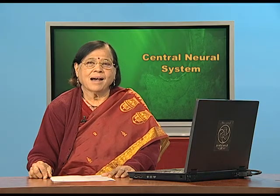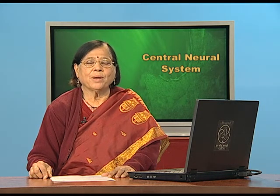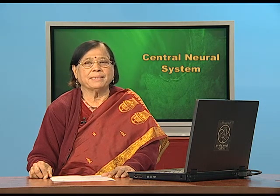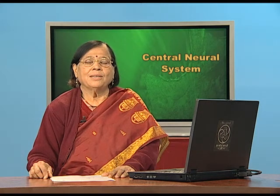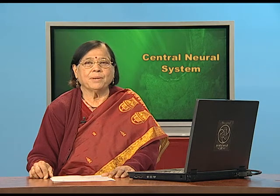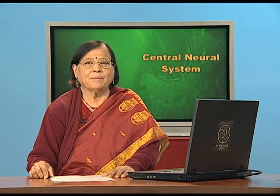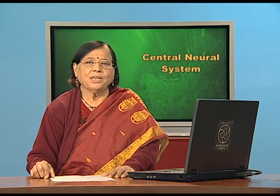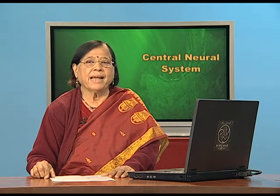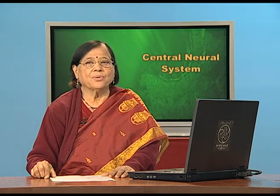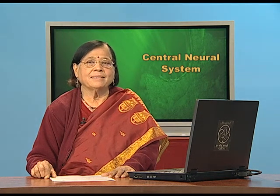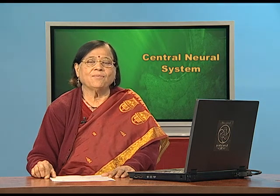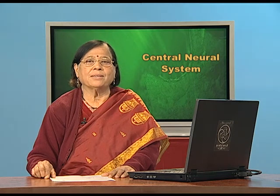Thalamus and hypothalamus are part of the forebrain, but these two parts, along with the hippocampus and amygdala, also form the limbic system, which is an important system for our body. So we have discussed the forebrain, which includes the cerebrum with two cerebral hemispheres, the cerebral cortex, sensory/motor/association areas, the thalamus for sensory and motor signaling, and the hypothalamus with its neurosecretory centers and hunger and thirst control centers. Thank you.